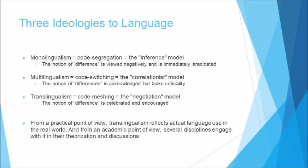This is what a translingual orientation to language attempts to do. Described as the negotiation model or code meshing, translingualism encourages users' agency, promotes linguistic heterogeneity, and fights monolingual policies that do not reflect the nature of language use and language relation. In other words, it assumes that languages are dynamic and interactive rather than static and discrete, and therefore the presence of language differences is considered not only normal, but also desirable.